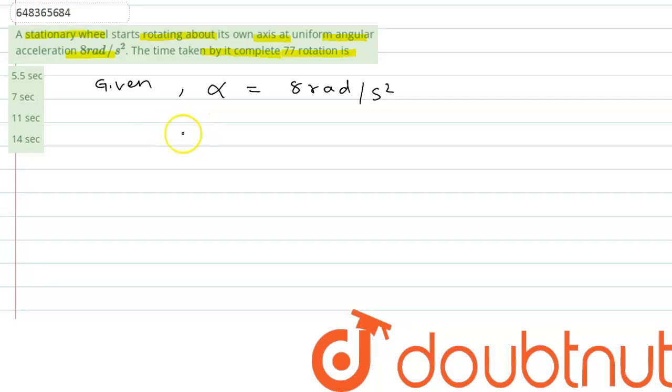So now we have to find out the time. First, let us find out angular displacement. What do we denote angular displacement? Theta. So theta will be number of rotations into 2 pi. So this will be 154 pi radians. So this will be theta.